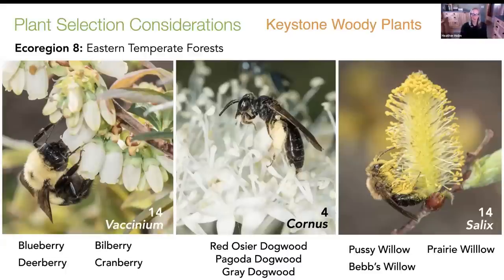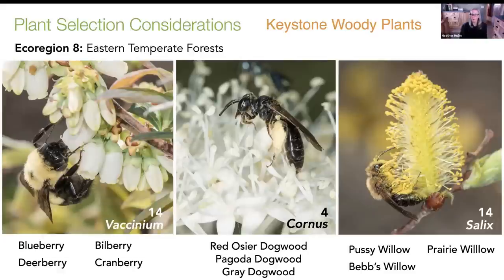Some woody plant genera are also on the top 30 keystone pollen plant list: plants in the genus Vaccinium — the ericaceous plants such as blueberries, bilberry, and cranberry — native dogwoods support four types of specialist bees, and willow is a really heavy hitter. Willow is at the top for both butterfly and moth caterpillar numbers and the number of bee pollen specialists. Willow blooms early in spring here in the upper Midwest — usually the first plant to bloom — and it attracts a wide variety of flower-visiting insects, providing good pollen and nectar for all kinds of bees. Overwintering queen bumblebees coming out of their shallow hibernation burrows can use willows for first nectar sources to fuel their nest-searching activities.